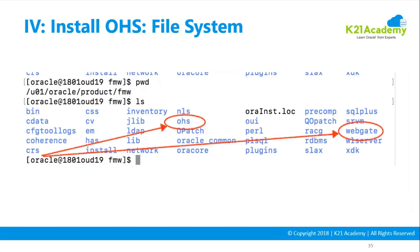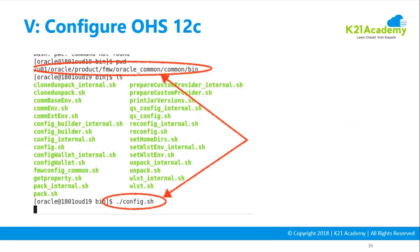This is what the file system is going to look like. You will see things like OHS and WebGate, and you'll see Oracle Common as well. You may not see other things like WebLogic. So there will be some limited files here when you do standalone mode. You then go back to the same structure to configure Oracle HTTP Server.